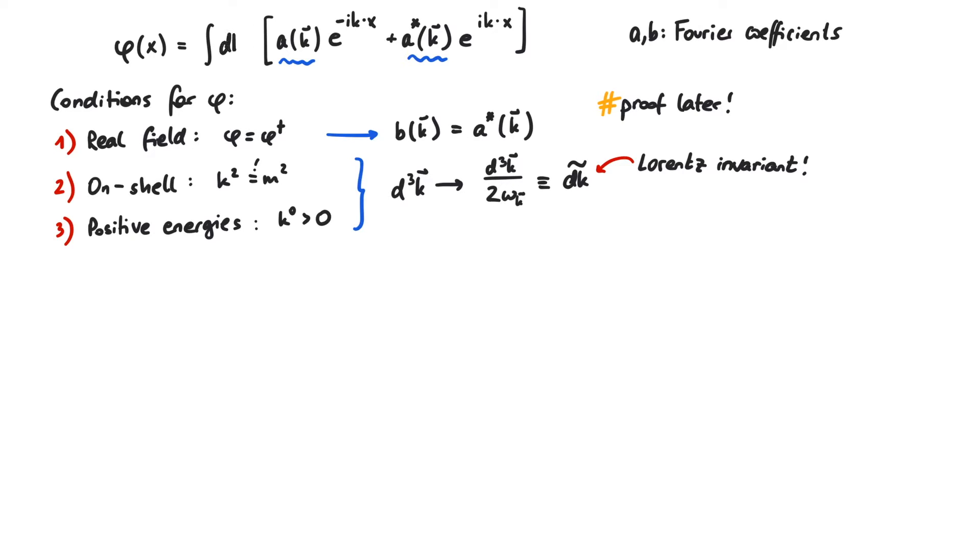At the end of this video we will prove these statements. Now that we implemented special relativity by means of conditions 2 and 3, we are ready to make our field quantum. There are basically two approaches, canonical quantization and path integrals.